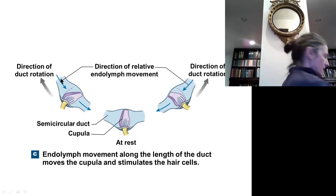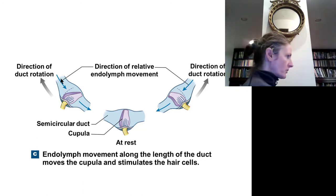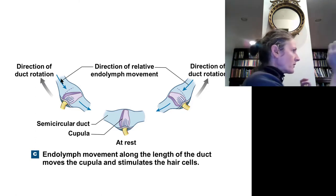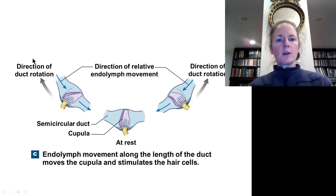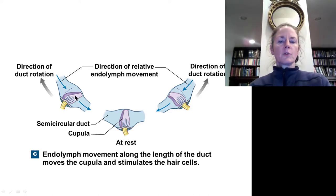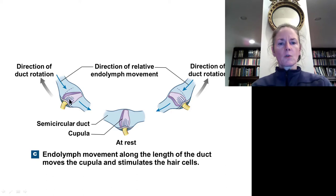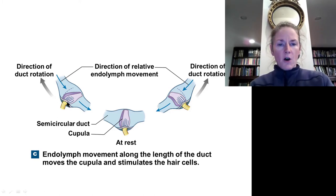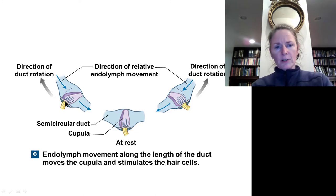When you rotate your head, you start to move but the fluid inside your ear stays stationary due to inertia. So your semicircular canals move around the stationary fluid, and the fluid then presses the cupula over. That pressure bends the stereocilia either toward or away from the kinocilium, causing either depolarization or hyperpolarization of the hair cell, which increases or decreases neurotransmitter release to the monitoring sensory neuron.